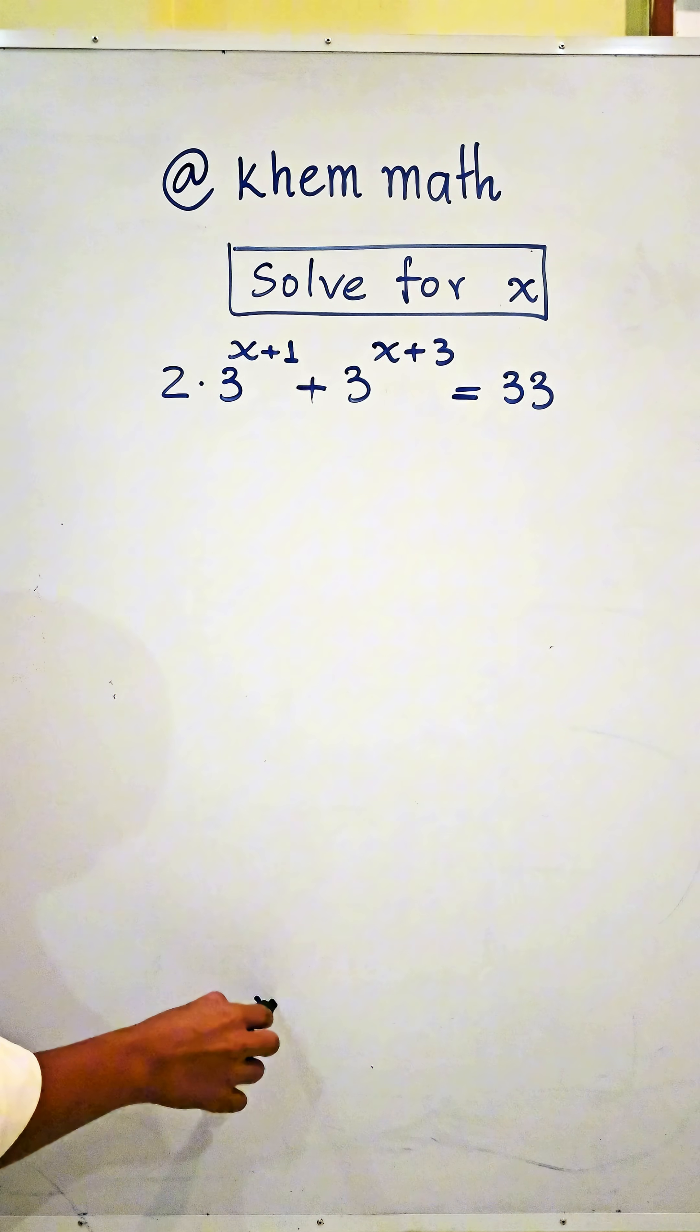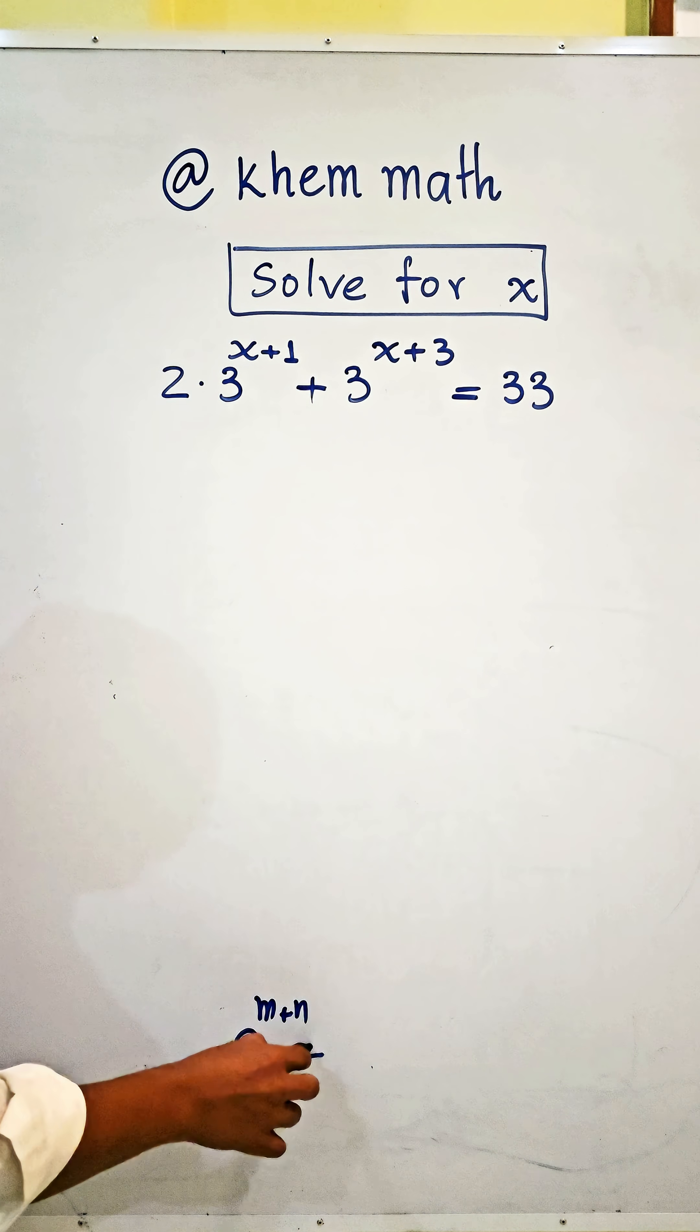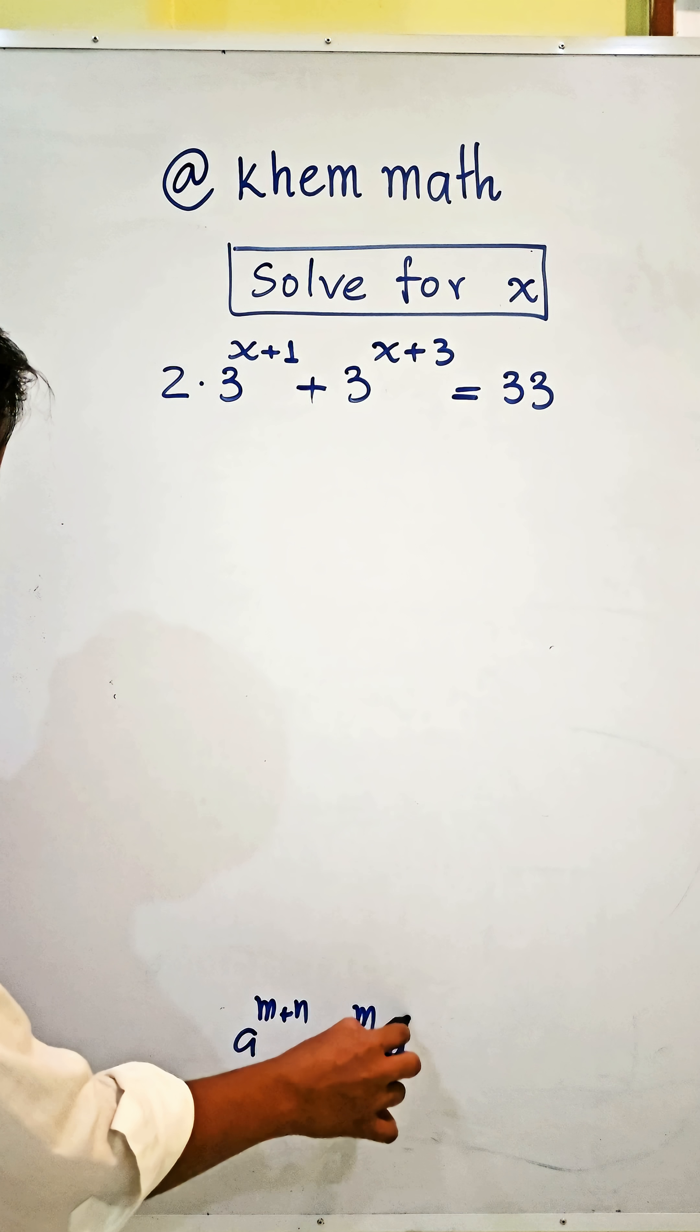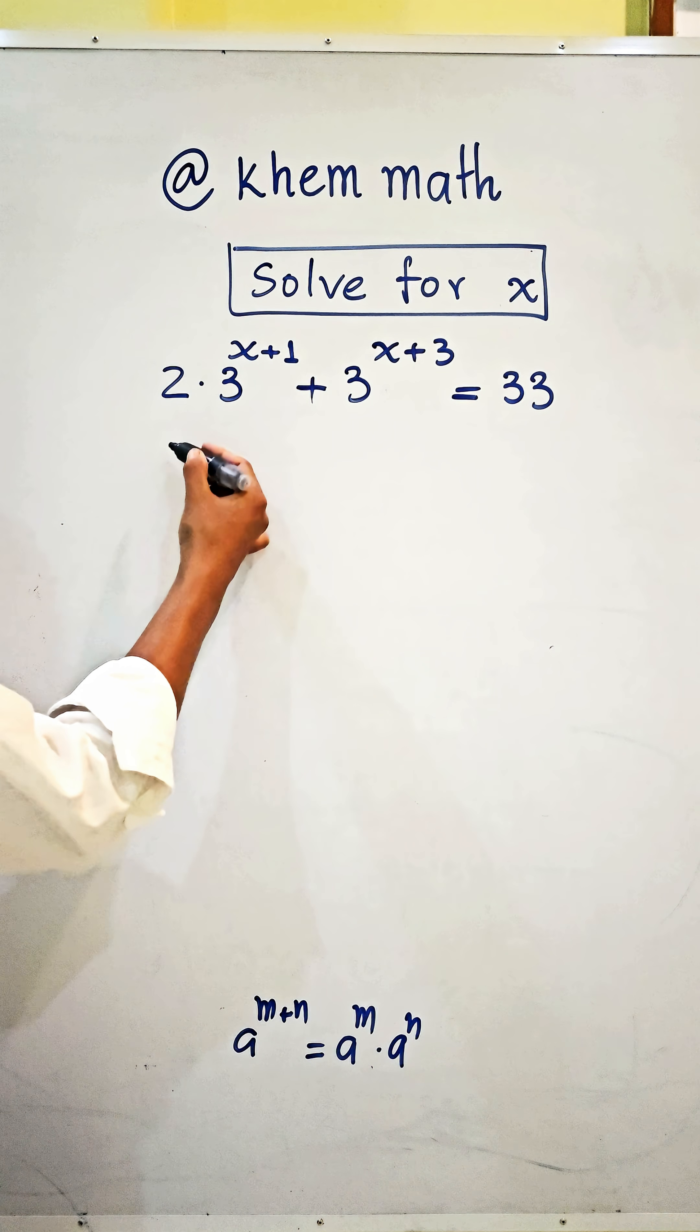If a power m plus n equals a power m times a power n. So here we get: